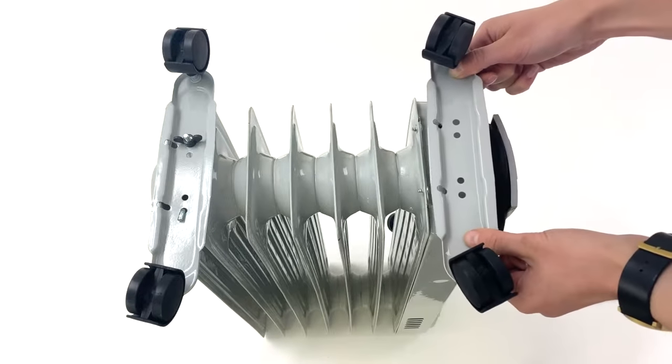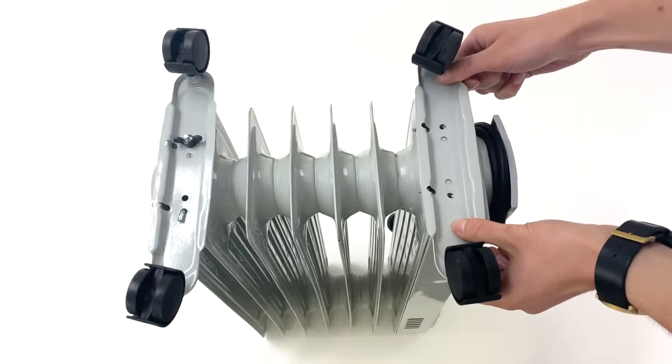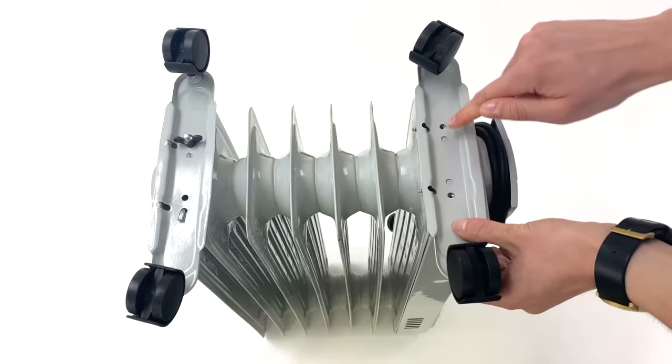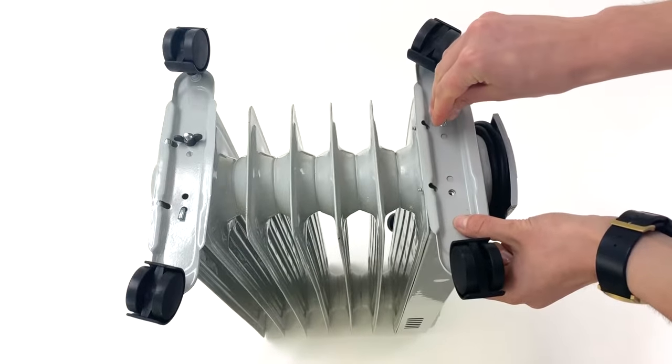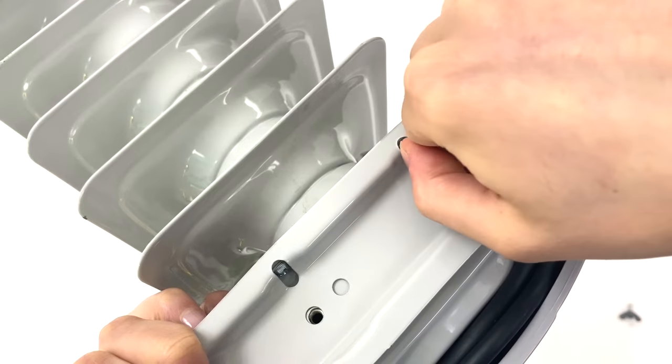Lay the wheelbase on top of the heater, lining the holes on the base and the heater up. Screw in the threaded wing nuts until tight and securely positioned.